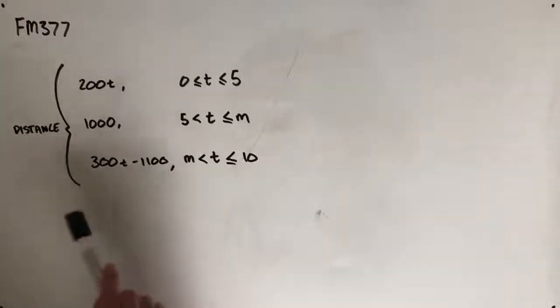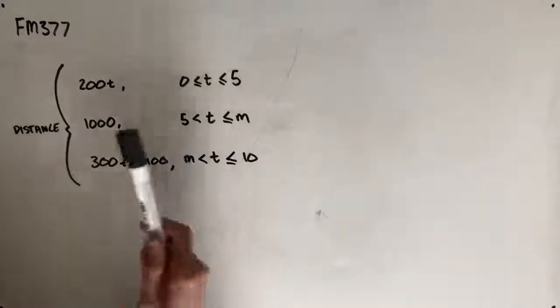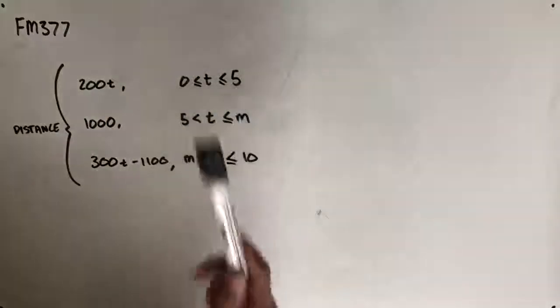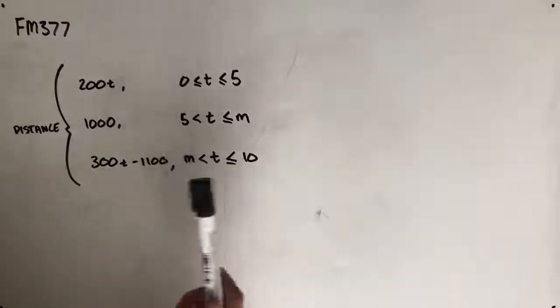And we're given this system of equations. So we've got distance is 200t for the values of t between 0 and 5, also including 0 and 5.